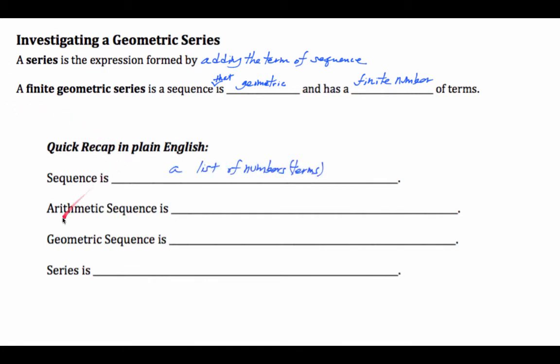Now when we talk about arithmetic sequence, it's a list of numbers, an orderly list of numbers, by adding a value. And that value that we add is called common difference, which could be either positive or negative. So you either go up or down.